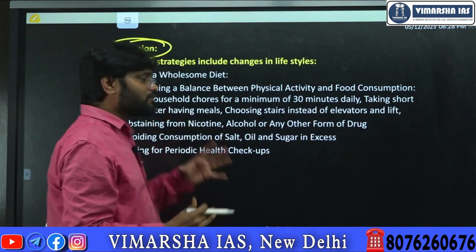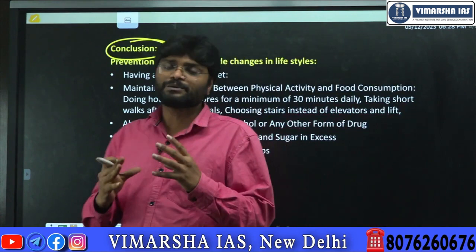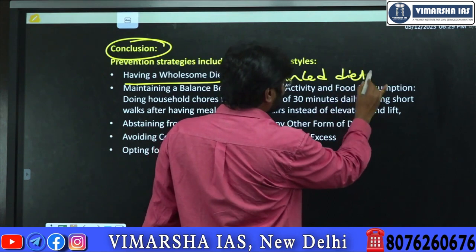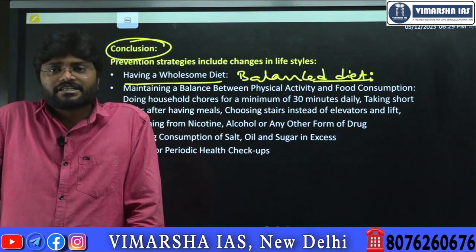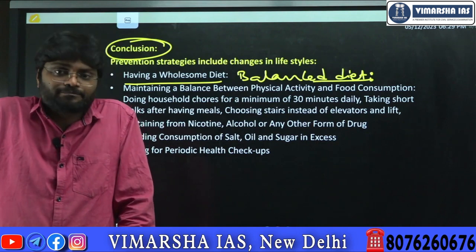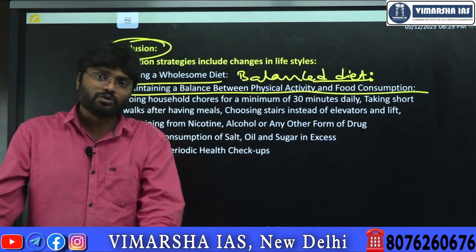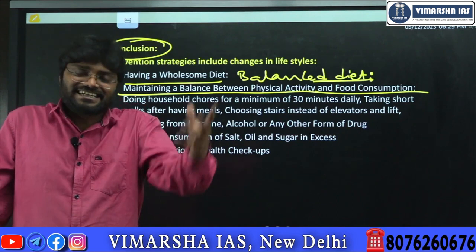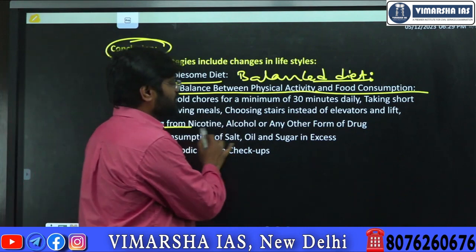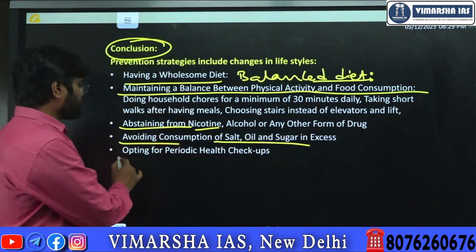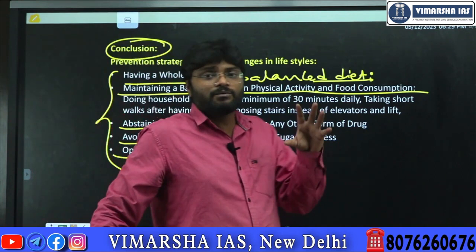For the conclusion, you should write about simple strategies to prevent lifestyle diseases. These include: having a balanced diet at regular intervals — including proteins, vitamins, minerals, carbohydrates, and fats; maintaining a balance between physical activity and food consumption; small lifestyle modifications such as doing household work, taking regular walks after meals, or using stairs rather than lifts; abstaining from nicotine, alcohol, or any form of drugs; avoiding excessive consumption of salt, oil, and sugar; and opting for periodic health checkups. These small lifestyle modifications help us avoid life-threatening lifestyle diseases.